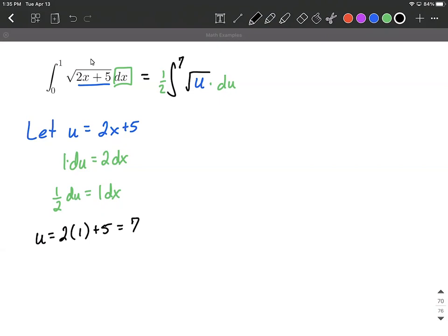So our upper bound is gonna be seven. And then a u value that corresponds with an x value of zero is when you plug in a zero. So zero plus five is gonna be five. So our lower bound is gonna be five.